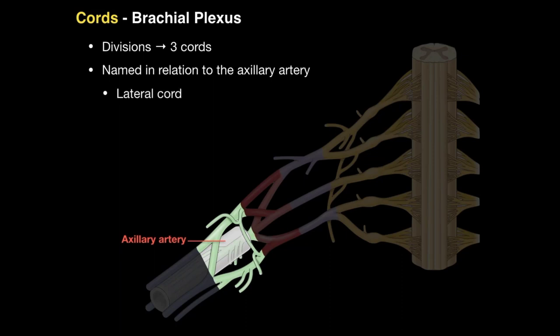The lateral cord is formed laterally to the axillary artery, the medial cord is formed medial to the axillary artery, and the posterior cord is deep to the axillary artery — that is, actually behind the axillary artery, which is hard to show in this picture.